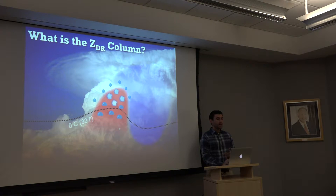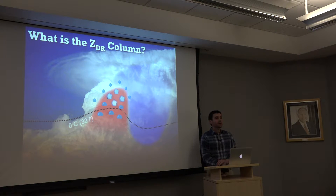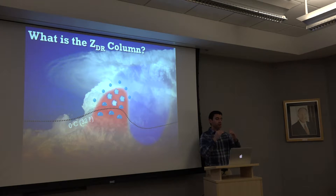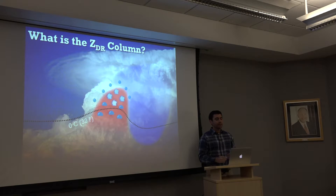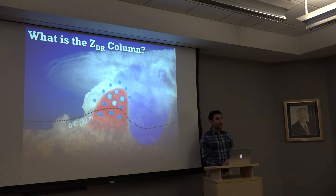Within our updraft, we have a distribution of precipitation particles — some larger drops that are being lofted above the freezing level. They don't have to freeze instantly once above 32 degrees Fahrenheit. Drops can remain in a liquid state — called supercooled liquid drops. You may also have smaller drops, growing hailstones, and small graupel in the updraft.